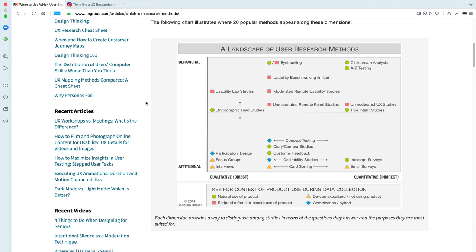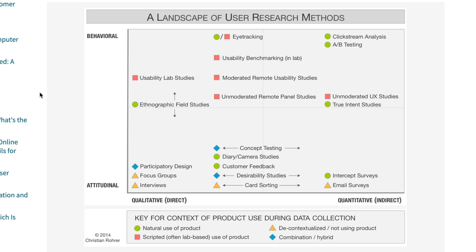That workshop itself is based on a pretty famous diagram in the field of user research. That diagram — I'll put it on screen now — is by Christian Rohrer. Christian Rohrer classified the various types of user research methods on a couple of dimensions. One dimension is whether the research method is quantitative or qualitative — in other words, whether it tells us what's happening or why something's happening. The other dimension is whether it measures user behaviour or users' attitudes. As you can see, you end up with research methods in different quadrants.